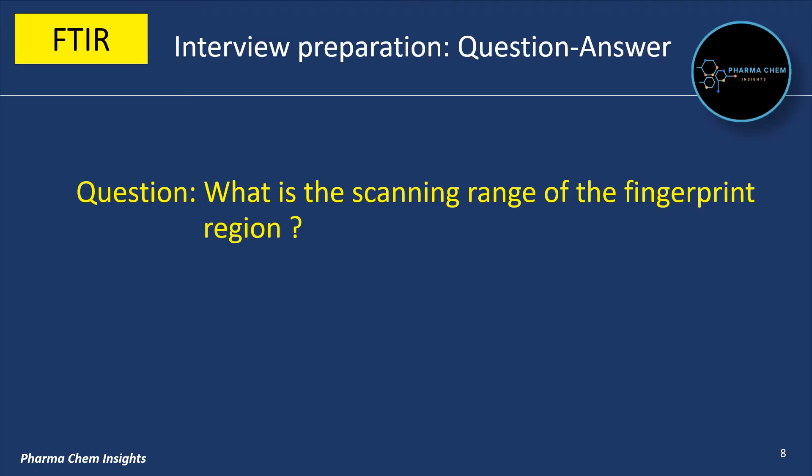What is the scanning range of the fingerprint region? The scanning range of the fingerprint region is 1500 cm⁻¹ to 400 cm⁻¹.